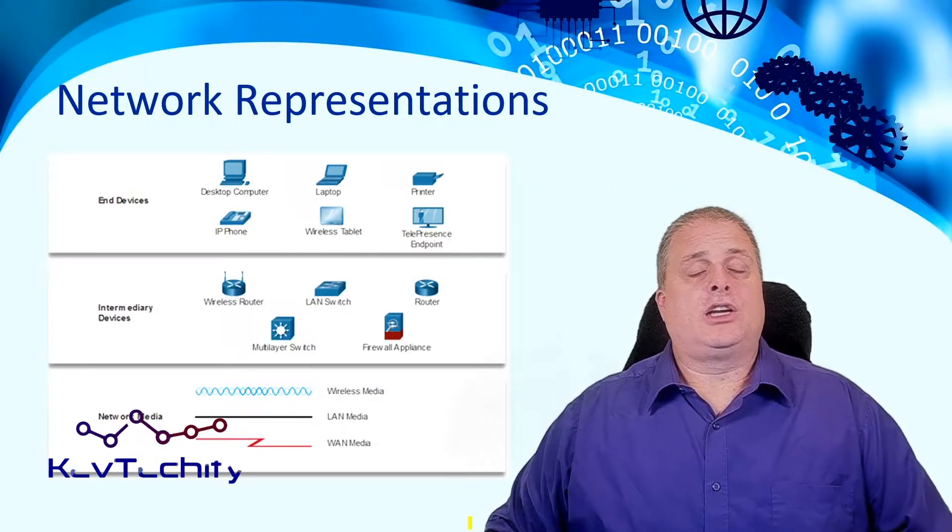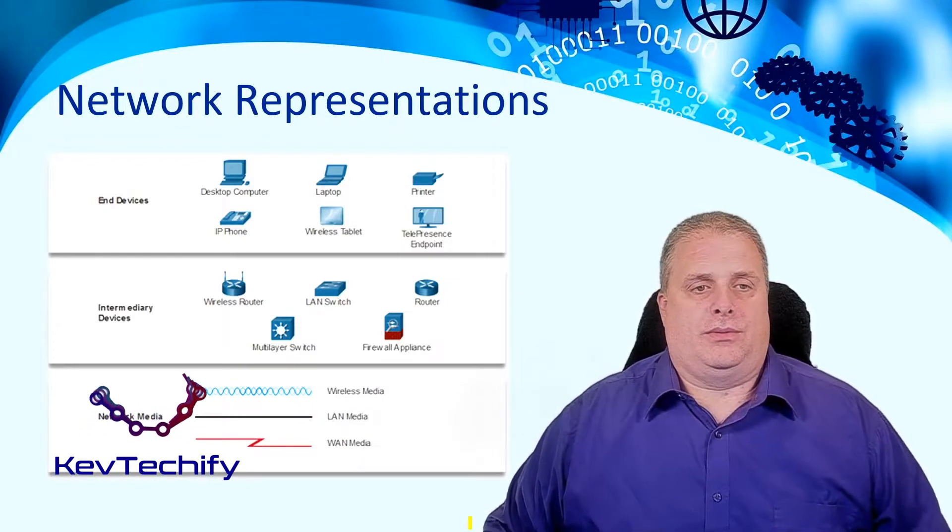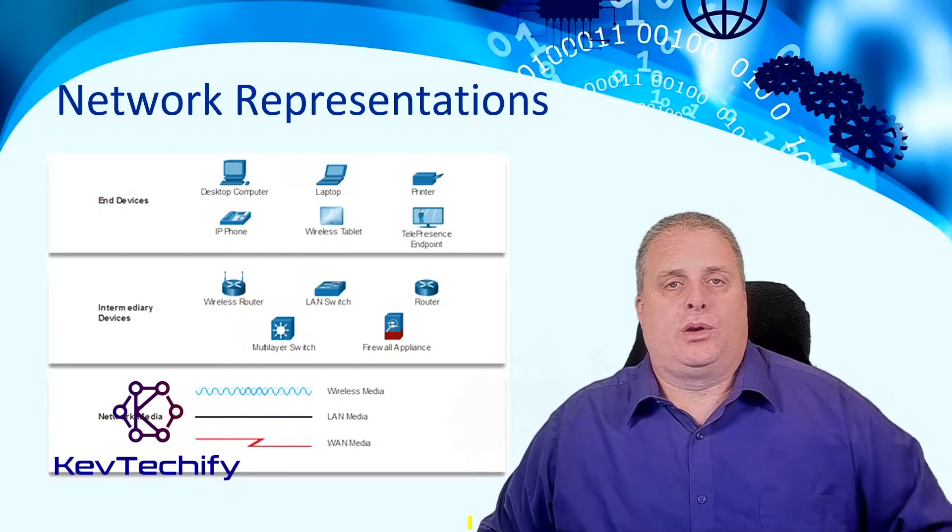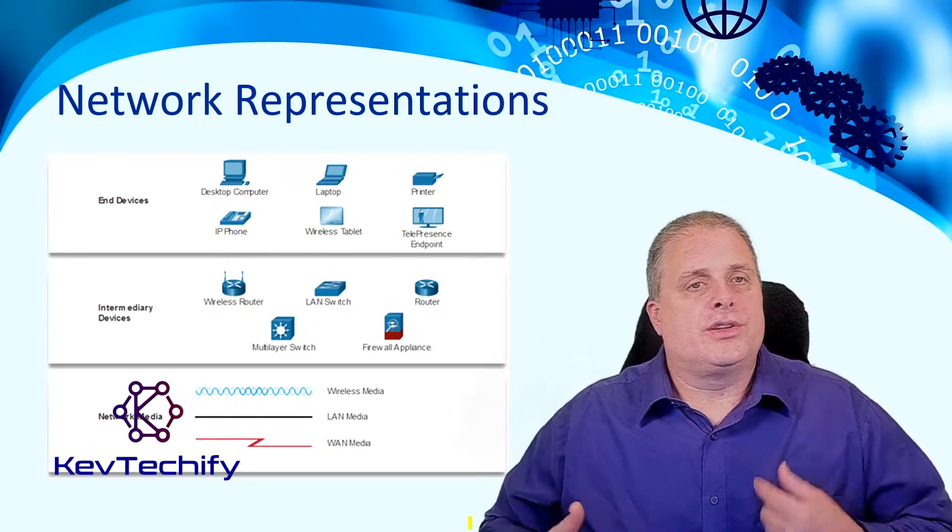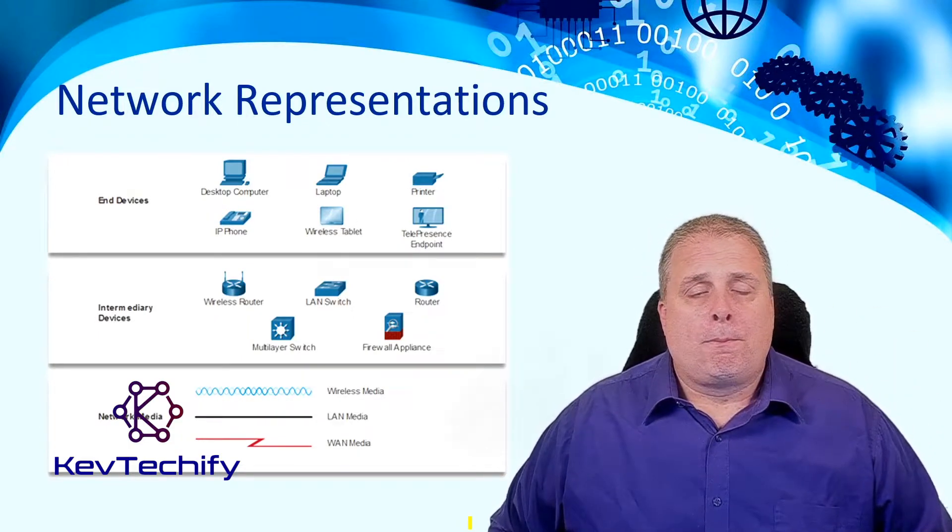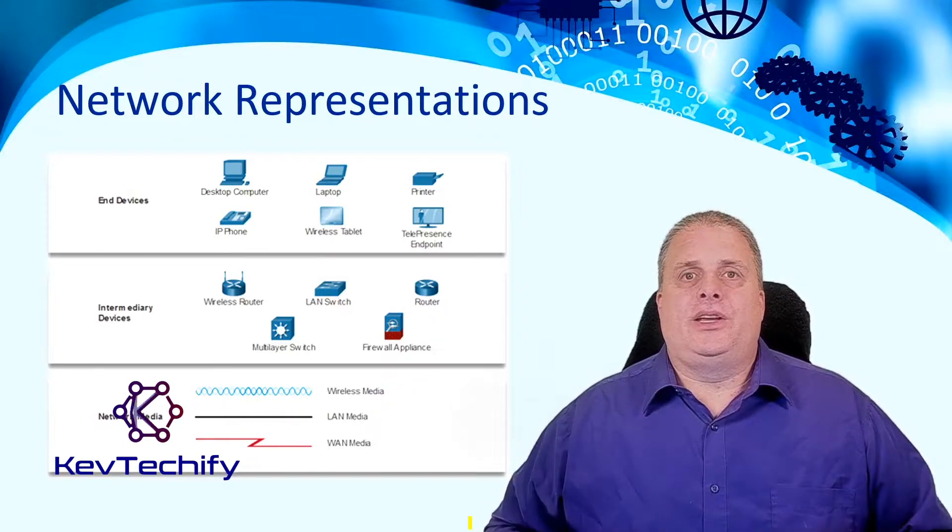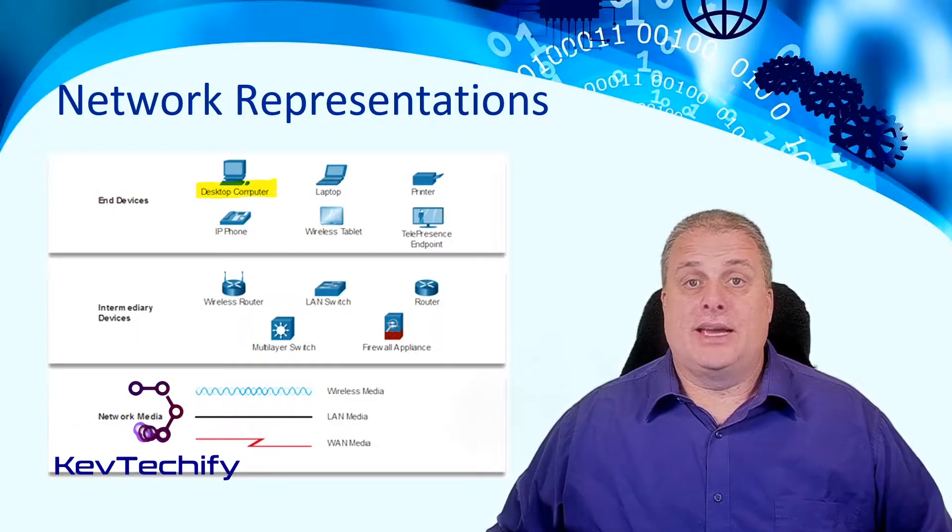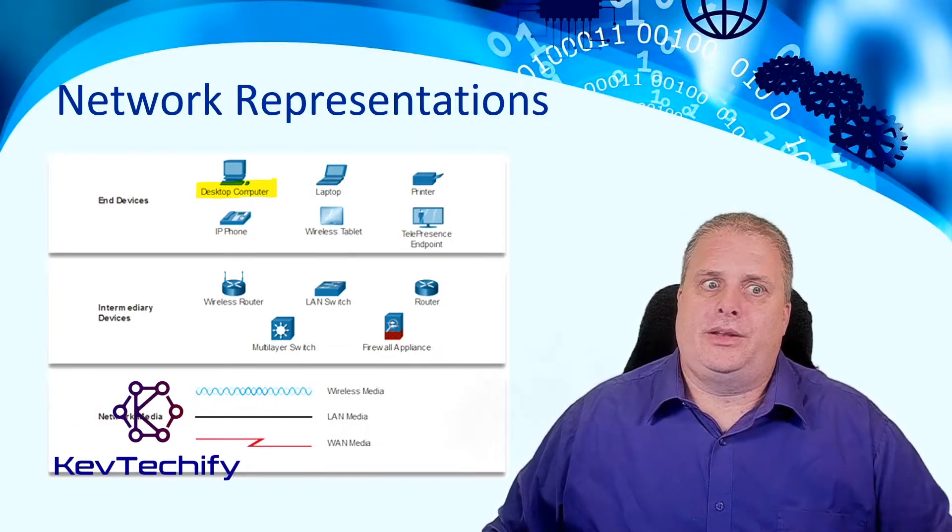These are some of the symbols I talked about when we draw our diagrams. We have the end devices, we have the intermediary devices, and we have the network media. All things we've talked about previously in this episode. But thankfully, a lot of these sort of look like what they represent. Take the desktop computer, for example. Desktop computer does look like a desktop.